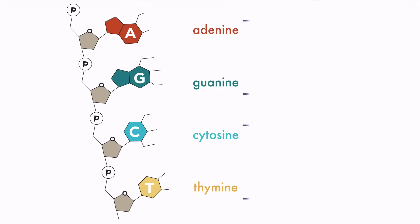Two of the bases are purines, which have a two-ring structure. And two bases are pyrimidines, which have a one-ring structure.